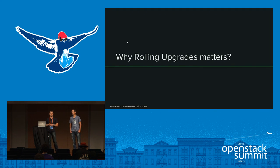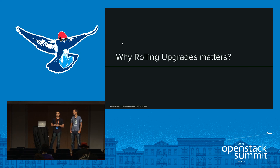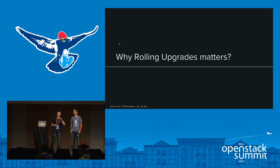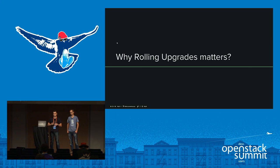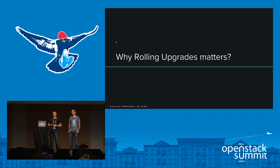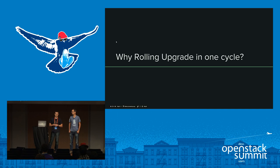Why do rolling upgrades matter? When you have rolling upgrades running, you will not drop any API requests from the customer or the cloud service provider. You will have no operational downtime — both at the API level, the server level, and the data plane level, like access to the VM via SSH or VNC. Your user won't be upset when they call your API and don't get their service done properly.